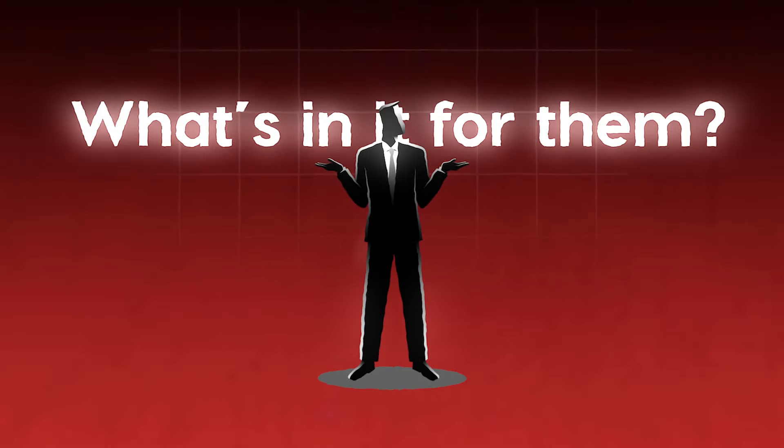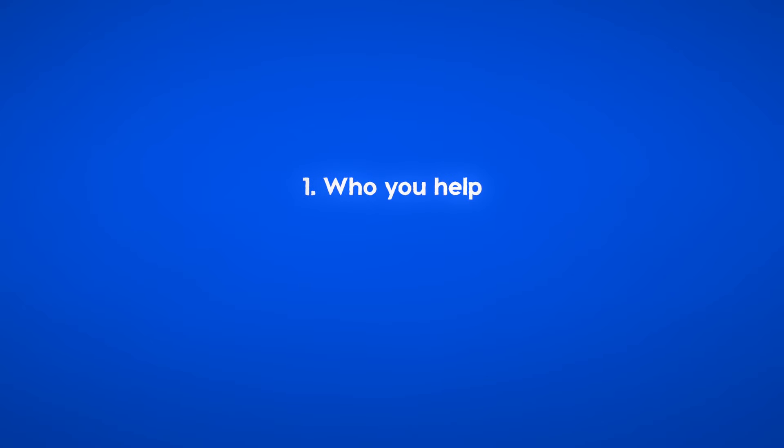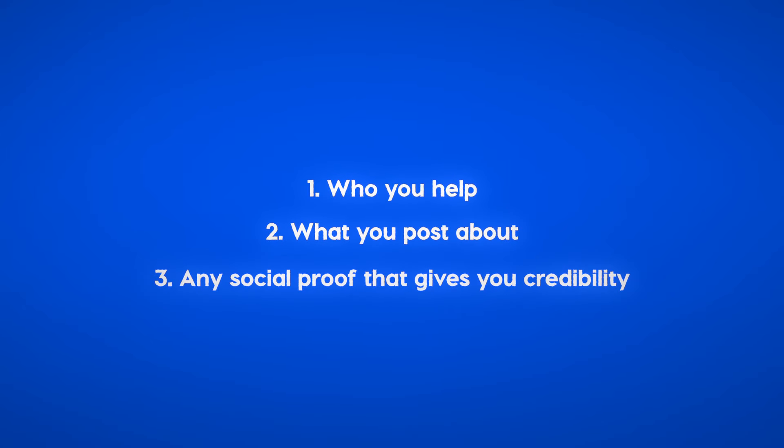People only want to know one thing when they visit your profile: what's in it for them? You need three things in your Twitter bio: who you help, what you post about, and any social proof that gives you credibility. Optionally, you can have a call to action to a lead magnet, a newsletter, or directly to your offer. Having these in your bio gives potential clients and followers a clear understanding of who you are and how you can help them.